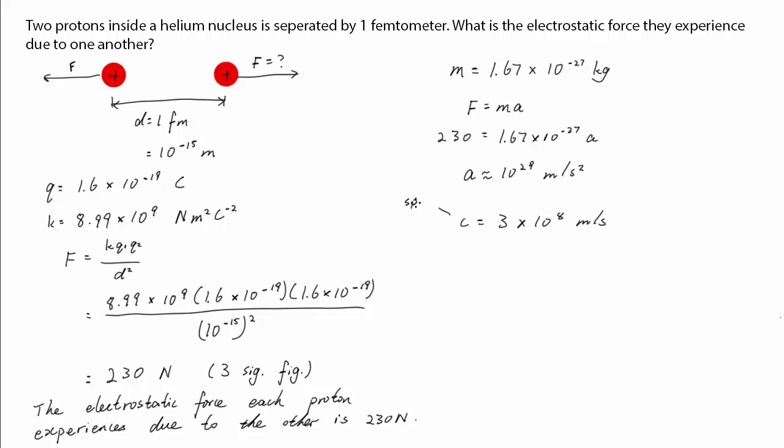Which means if the strong nuclear force wasn't holding the nucleus together, it would take the proton about 10 to the negative 21 seconds to approach the speed of light.